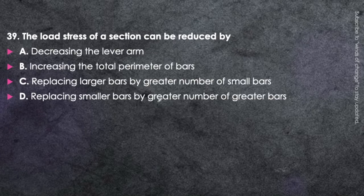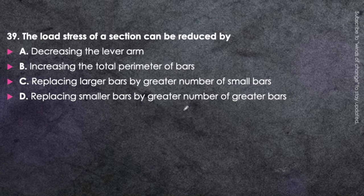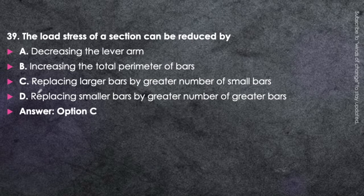Next question: The load stress of a section can be reduced by replacing larger bars with a greater number of smaller bars — option C is correct. The load stress is reduced by increasing the total perimeter of bars, which is achieved by replacing larger bars with a greater number of smaller-diameter bars.